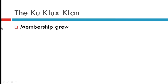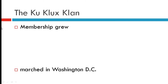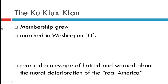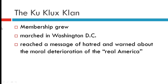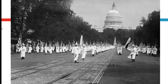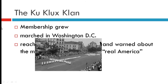KKK membership increased throughout at least the first half of the 1920s. They continued to preach hatred, warning about the moral deterioration of 'real America,' and extended that bigotry toward basically all minority groups, using intimidation and fear to keep those groups down. They marched on Washington D.C. — as you can see here, without their masks — making a stronger statement by giving up anonymity. In this photo from that same demonstration, they use symbols of Christianity to build a bond between their message and some idea of a pure Christianity.